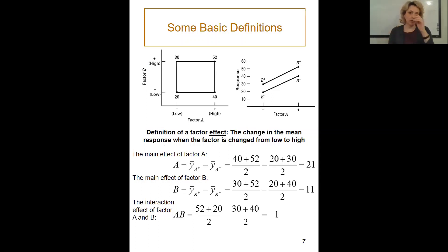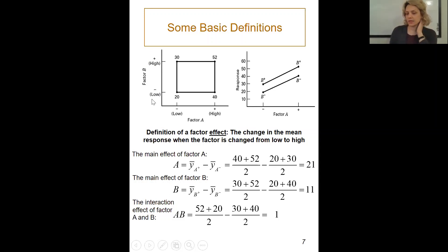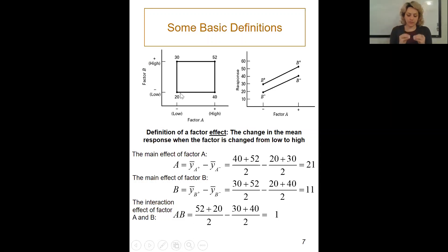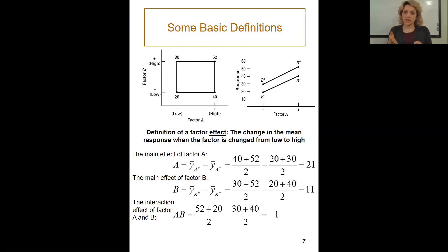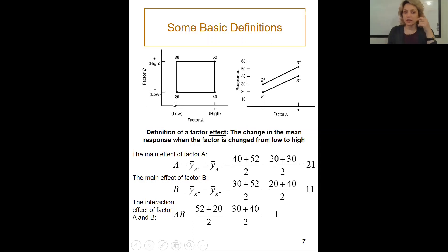The low level is shown as negative (minus one) and the high level as positive (plus one) — we'll talk about that coding later, as it helps a lot with calculations. When running the experiment at the low level of temperature and the low level of purity, the result (response value) is 20.